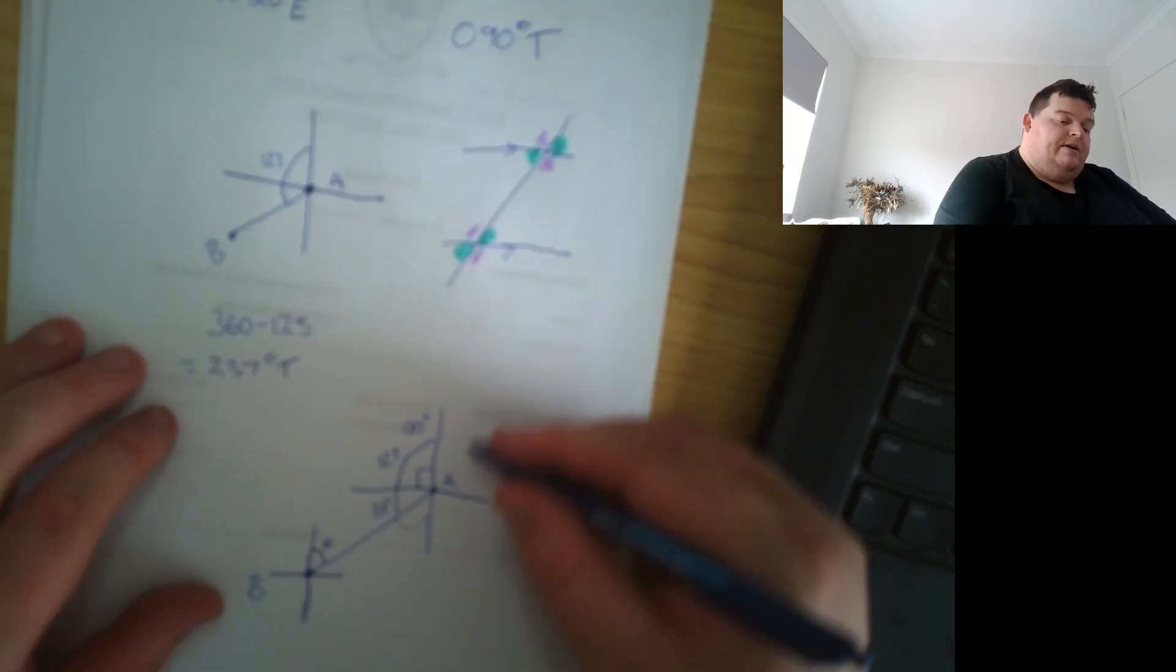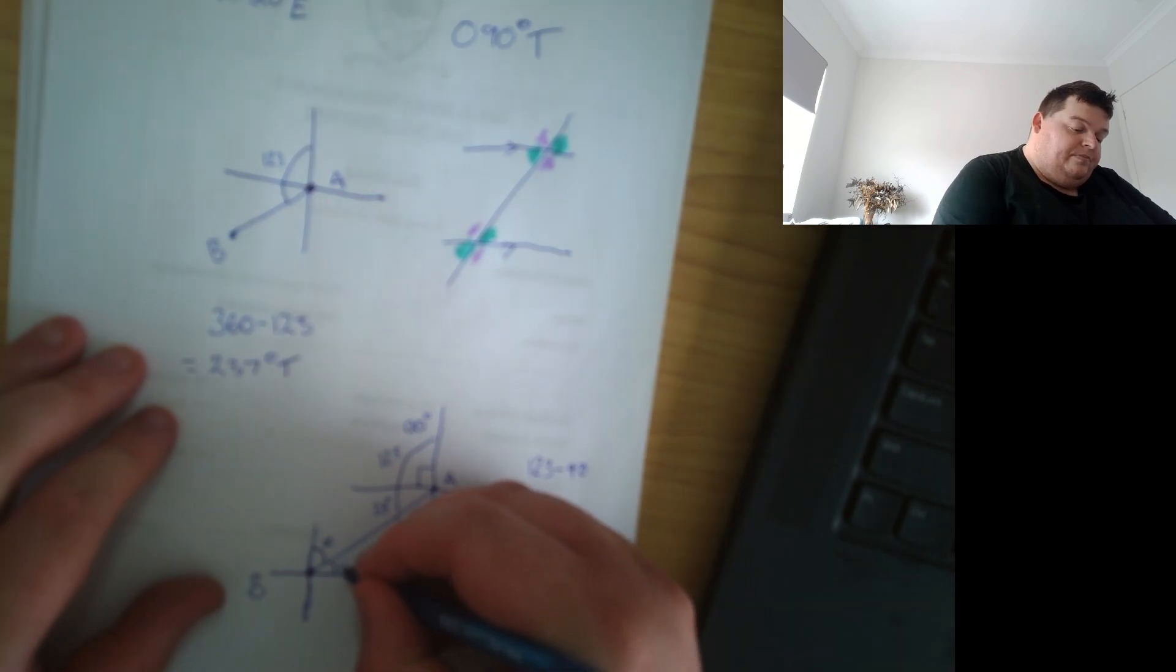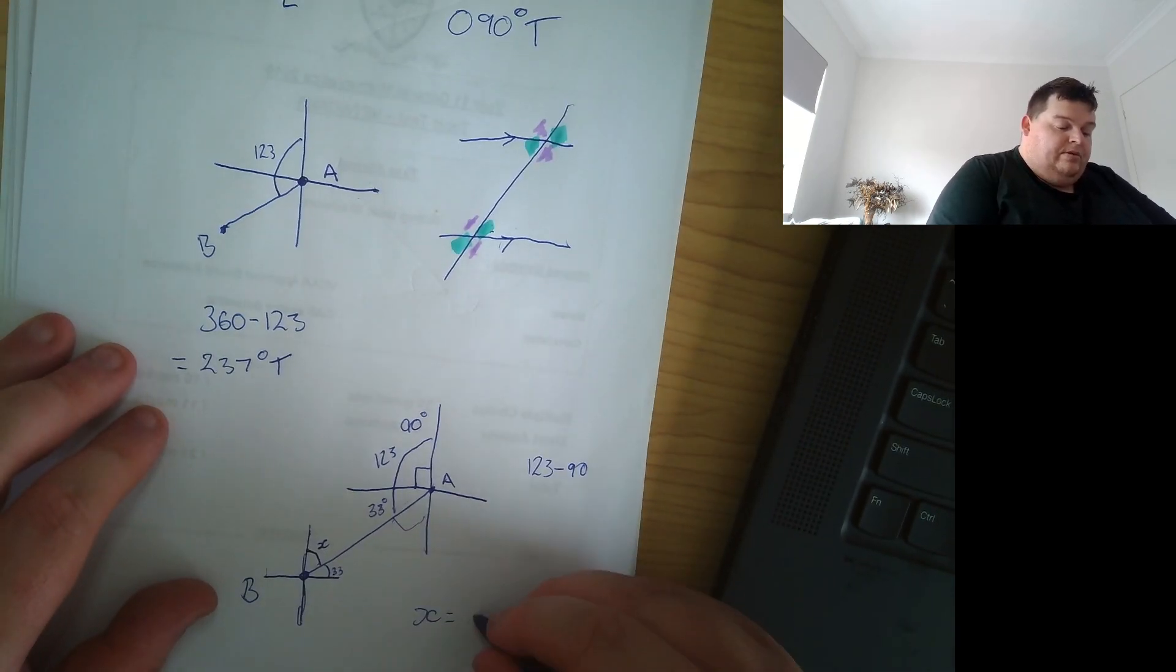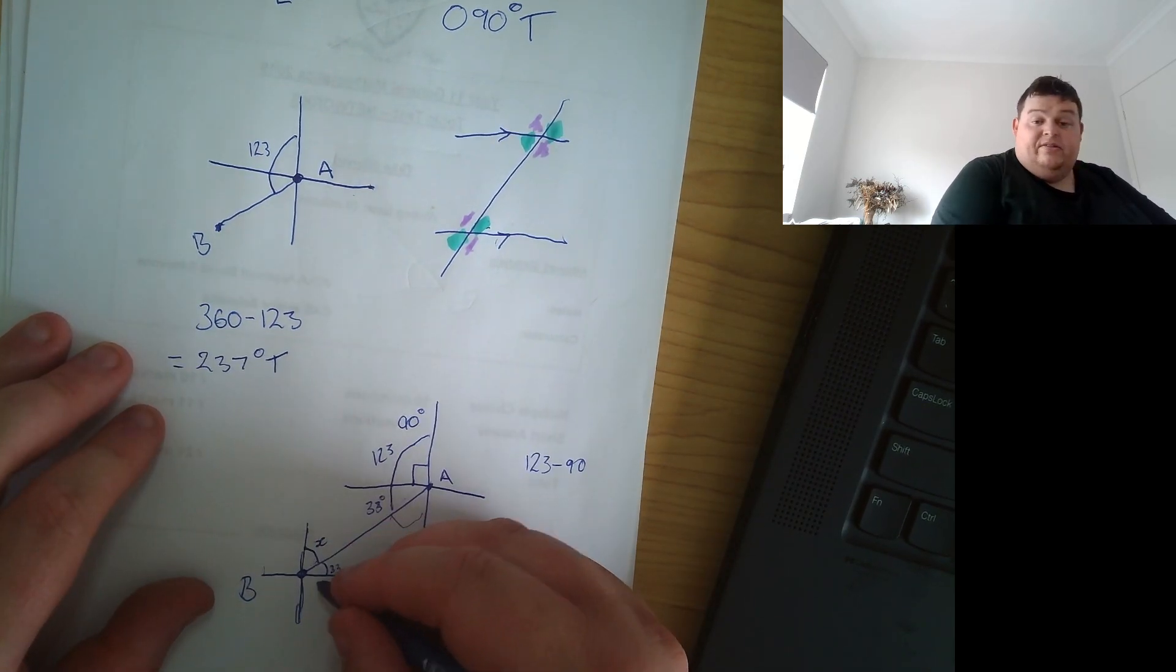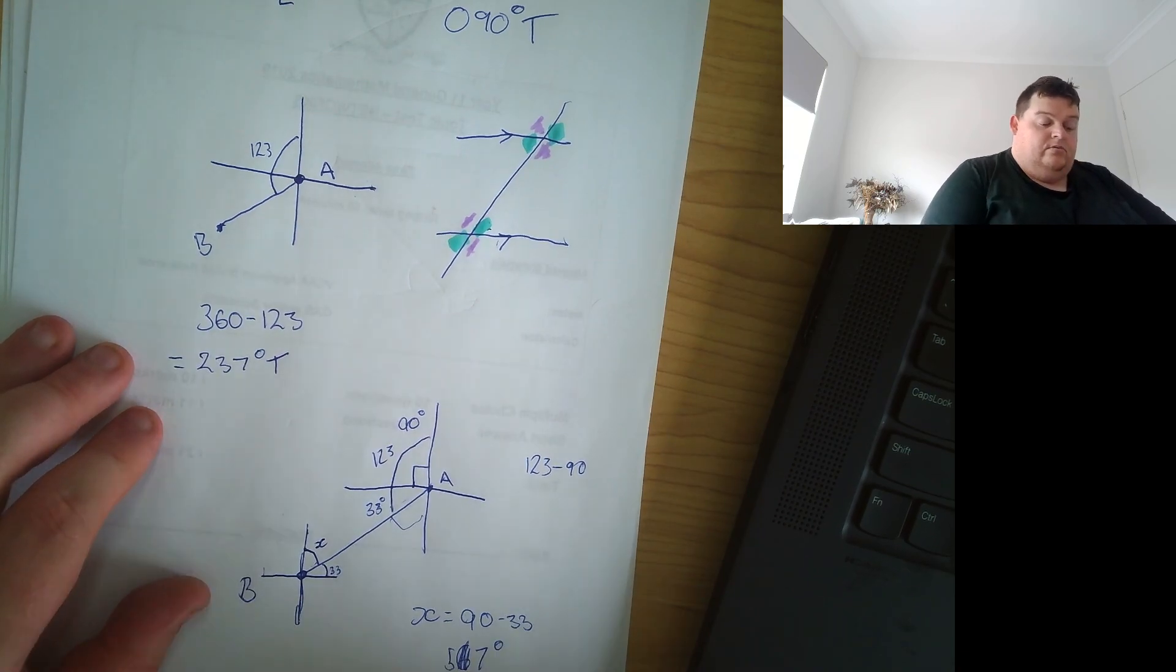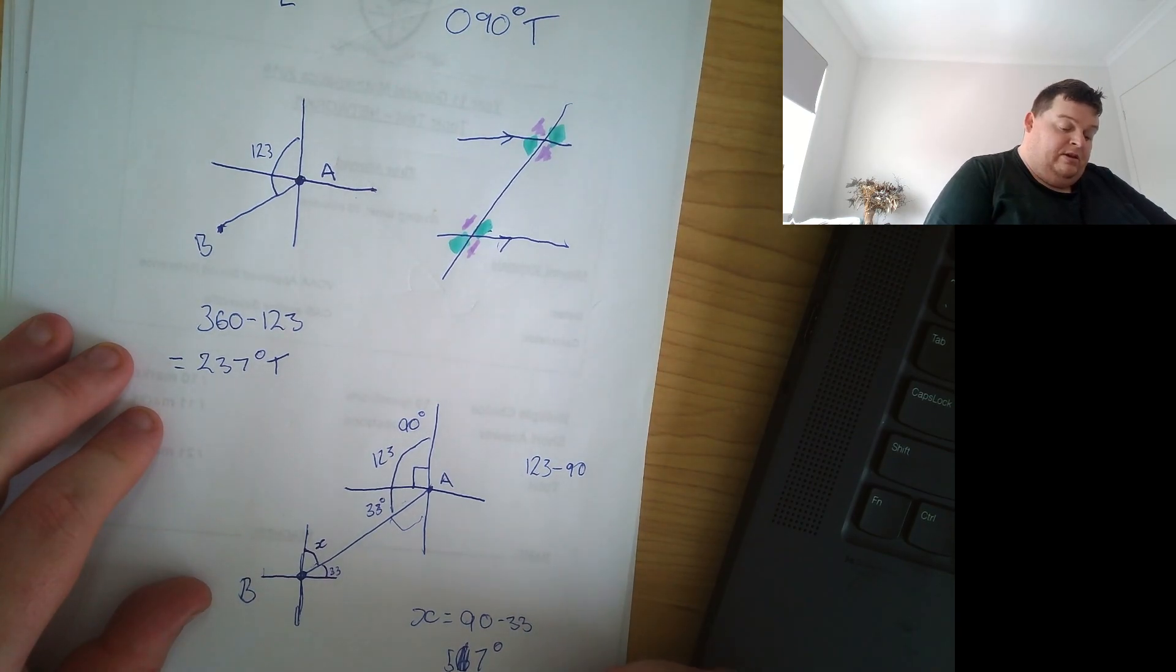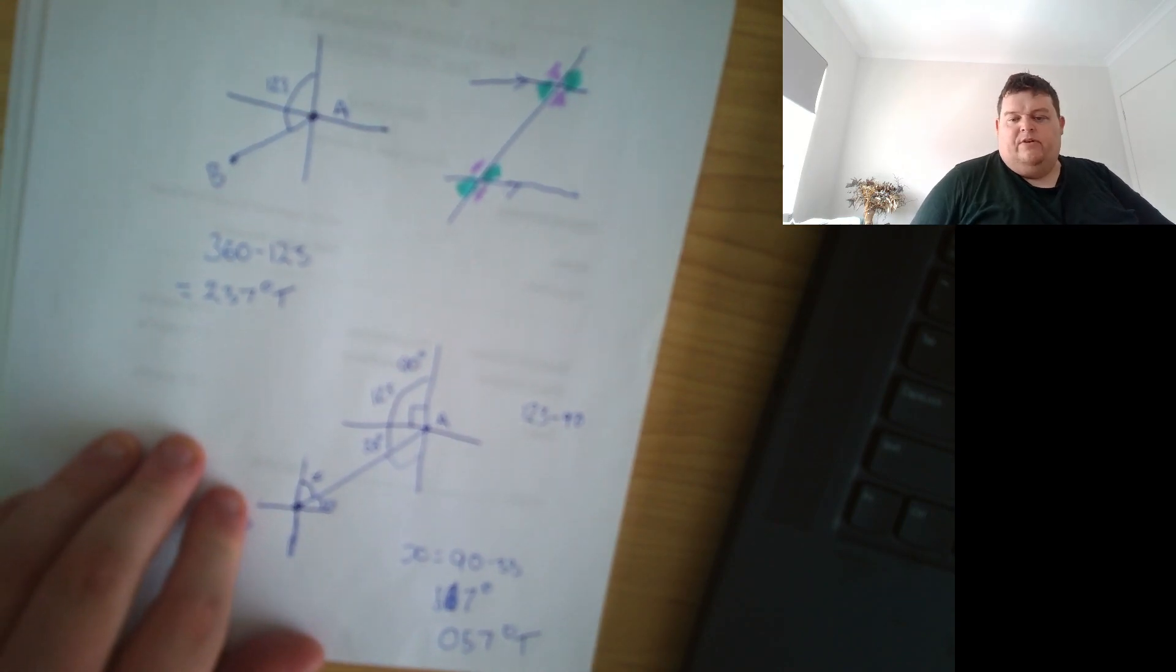We also know that if we could solve for this bit and that would give us our x. So whichever way you want to go about it, I'm just going to do that's 33, which means this is 33, which means this one, this x will be equal to 90 minus 33. Because again, that's a right angle, which is 57 degrees. Alright. It's a good habit to do your true bearings as three digits. So 057 degrees true is our final answer.